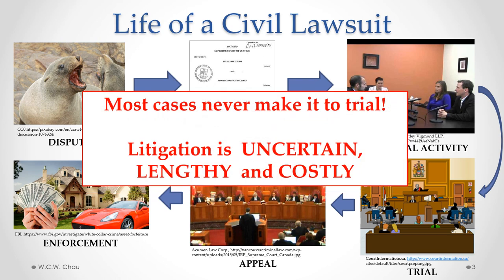One overall point to keep in mind is that most cases never make it to trial — 95% or more of cases are settled before ever reaching the trial stage. Litigation is uncertain in the sense that you can never be 100% sure whether you will win or lose. Second, the process of a civil lawsuit from beginning to end is lengthy — not like on TV. A lawsuit can go over a period of two, three, four, five, or more years. And because it's lengthy, it's costly — lawyers are expensive and legal fees add up.